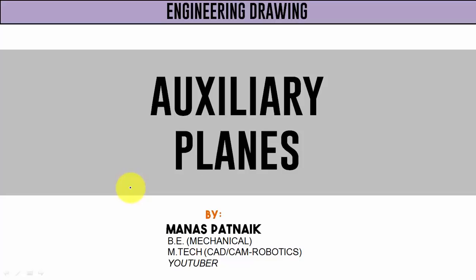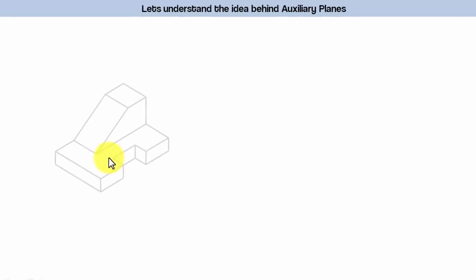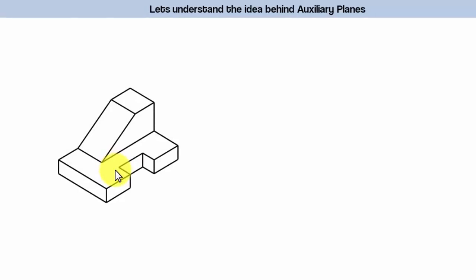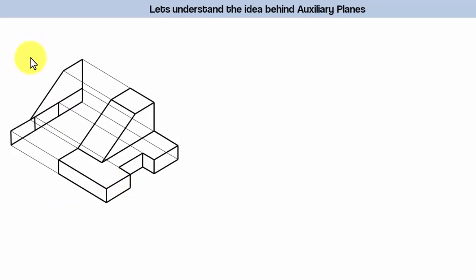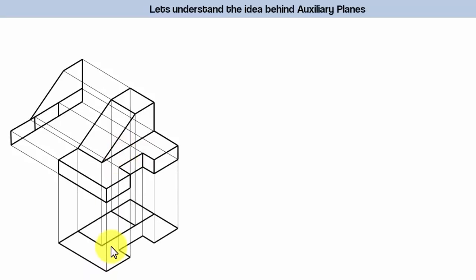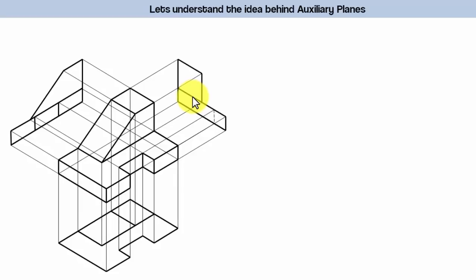Let's kick off today's session with one simple question: why are we studying auxiliary planes? What's so special? To answer that, let me give you a demonstration. Here we're considering a 3D object and we'll try to look at it from three different ways — from the front, from the top, and from the left-hand side — so we can have the front view in the vertical plane, the top view in the horizontal plane. Now when you look at this object from the front, the true shape of these three rectangles is pretty much visible in this front view.